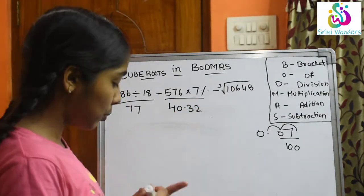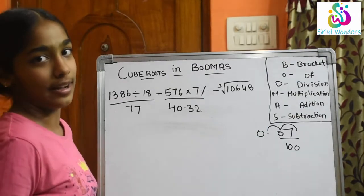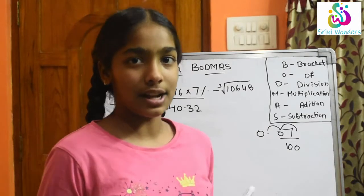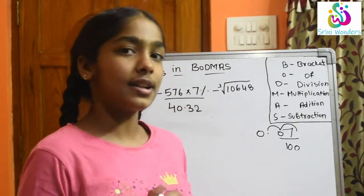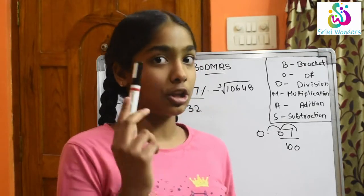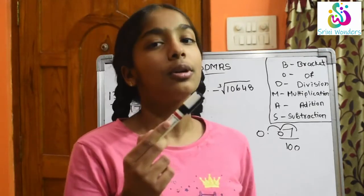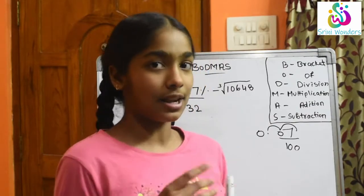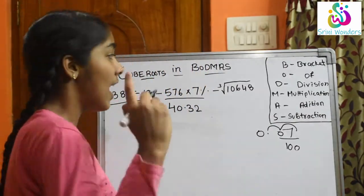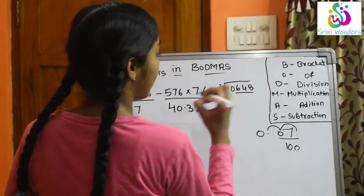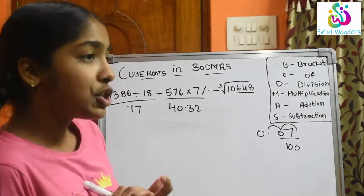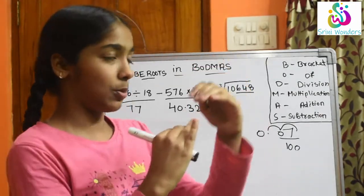Now the cube root of 10648 — how to solve? Cube means any number multiplied by itself 3 times. For example, 2 cubed means 2 into 2 into 2. Since cube means 3, we leave the last 3 digits. What is left over? 10 is left over, so we check in which cube range it falls.